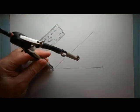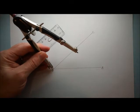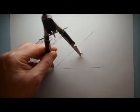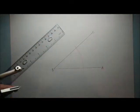Put the pointy end on point B and draw a little arc like that.